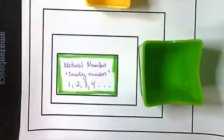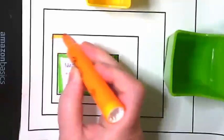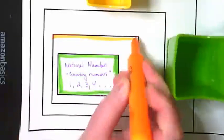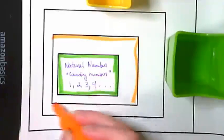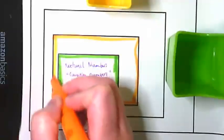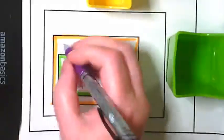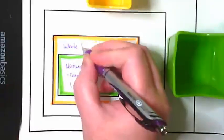And then we have another set. It is slightly bigger than the natural numbers. This box makes it look like it's a lot bigger, but it really isn't. It only includes one more number. You all know this name. These are the whole numbers.